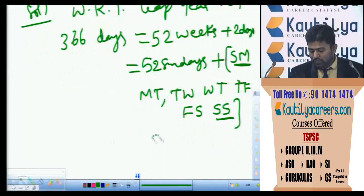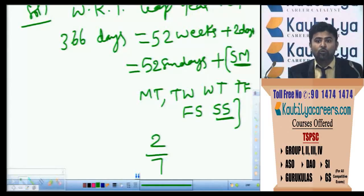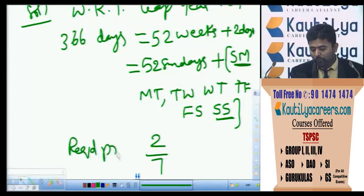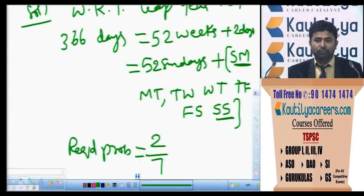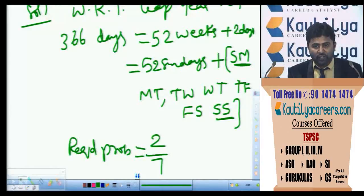There are 2 chances out of 7 combinations of having one more Sunday. Therefore, the required probability is equal to 2 by 7. We have 52 Sundays and need 1 more; that extra Sunday can appear in 2 of the 7 combinations, so the required chance is 2 by 7.